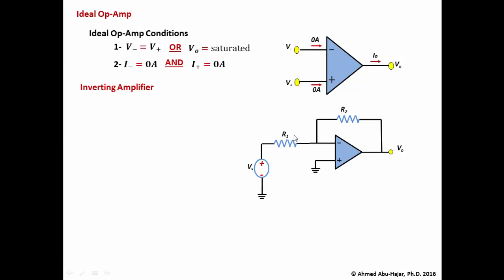Now we analyze the circuit. The v plus input is connected to ground. Applying the first condition — v plus equals v minus — the inverting node must also equal zero volts. So v minus equals zero. Now that we know the voltage at the inverting node, we can determine the current i1 flowing through resistor R1.